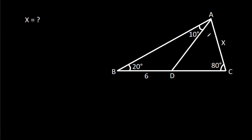In this video, we have been given that angle ABD is 20 degrees, angle ACD is 80 degrees, angle BAD is 10 degrees, and BD is 6. AC is x, and we have to find x.